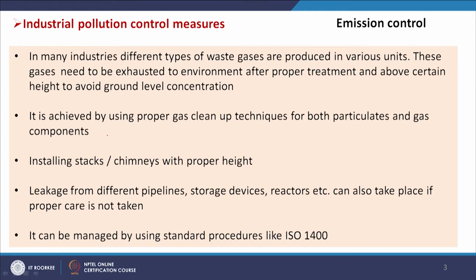These gases need to be exhausted to the environment after proper treatment and above a certain height to avoid ground-level concentration. Industrial chimneys should have a certain height so that pollutants cannot reach ground level where people are working. This is achieved using proper gas cleanup techniques for both particulates and gaseous components. Fugitive emissions from pipelines, storage devices, and reactors can be managed using standard procedures like ISO 14000.